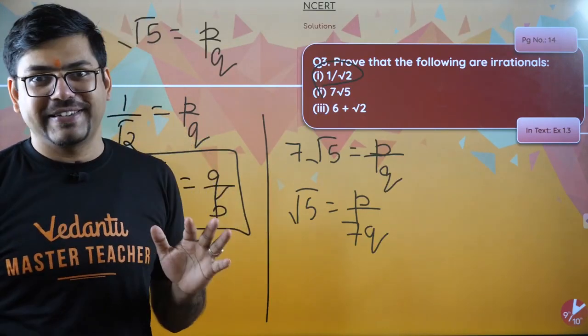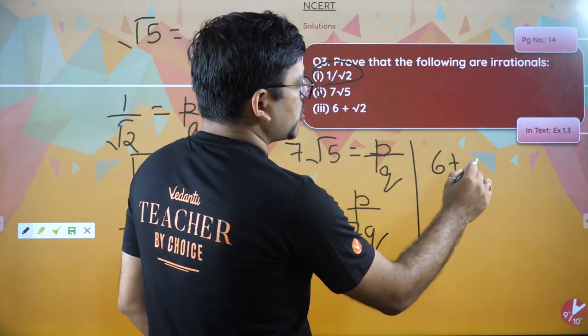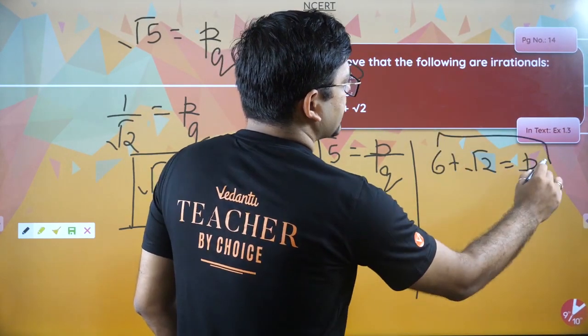Same goes for 6 plus root 2. So 6 plus root 2, you will again assume equals p by q. Send this 6 to this side.